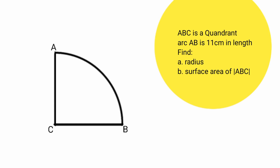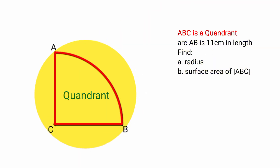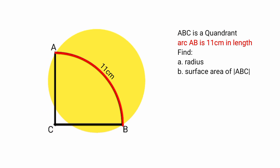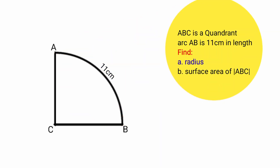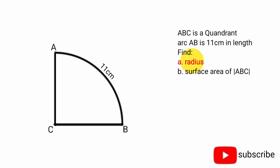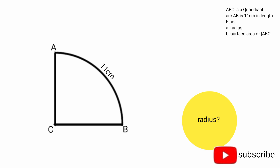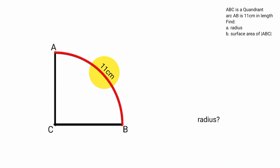Hello, good day guys. This is ABC, here is a quadrant of a circle, and the length of this arc AB is 11 centimeters. We are asked to find: (a) the radius of the circle, and (b) the area of the quadrant ABC. So how can we solve this? Starting from part (a) to find the radius, since they say this arc AB is 11 centimeters.